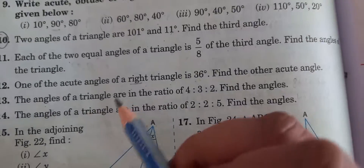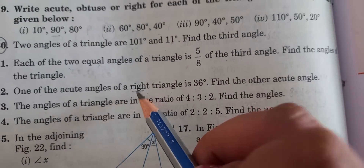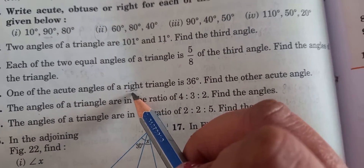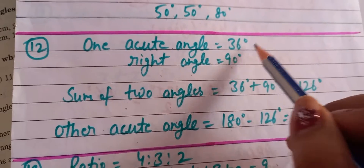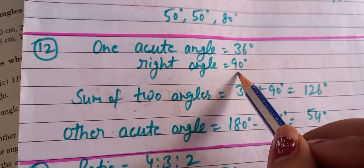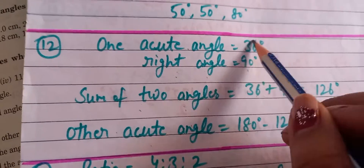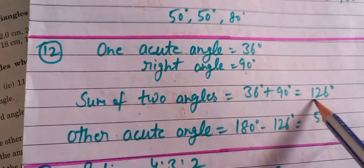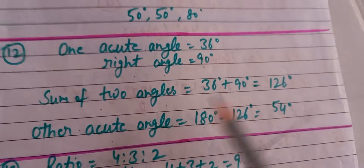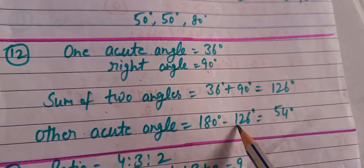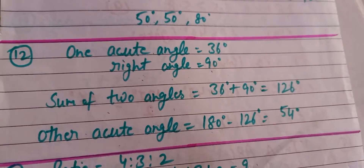Question number 12: a right triangle is given. One angle is 90 degrees and another acute angle is 36 degrees. Adding these gives 126 degrees. To find the other acute angle, subtract 126 from 180, giving the third angle as 54 degrees.